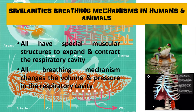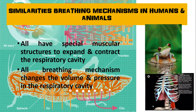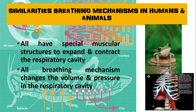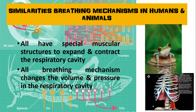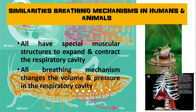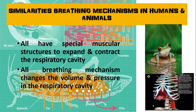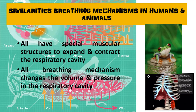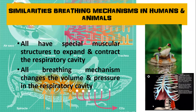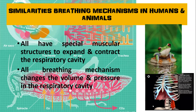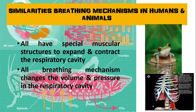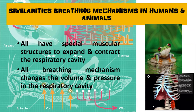These are the similarities in the breathing mechanism in humans and animals. First, all have a special muscular structure to expand and contract the respiratory cavity. Second, all breathing mechanisms change the volume and pressure in the respiratory cavity.